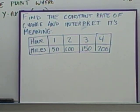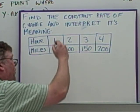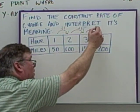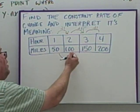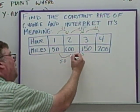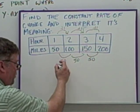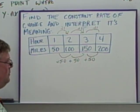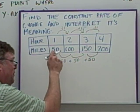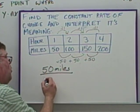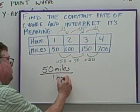All right, here we are asked to find the constant rate of change and interpret its meaning. We've got to find the rate of change. So the first thing we do is go find the difference. That's plus one, plus one, plus one. These two, 100 minus 50 is 50, 150 minus 100 is 50, and again, we have 50 here. So we're adding 50, adding 50, adding 50. So it looks like our rate of change is the y over the x, 50 miles over one hour.